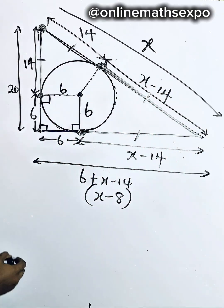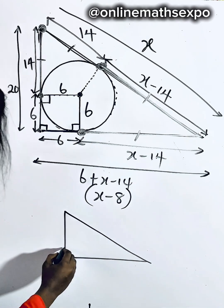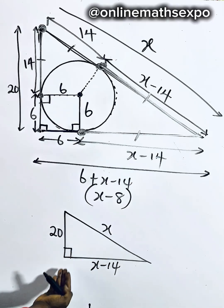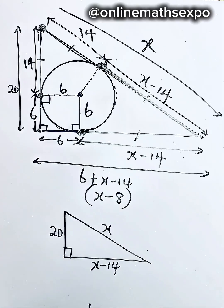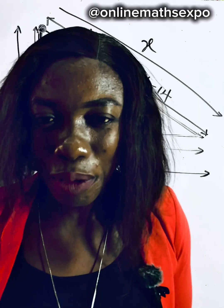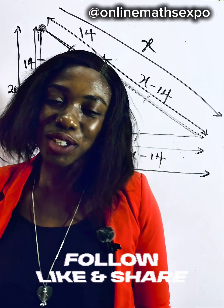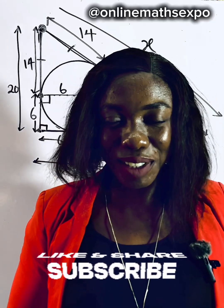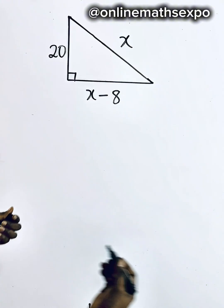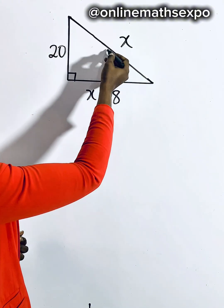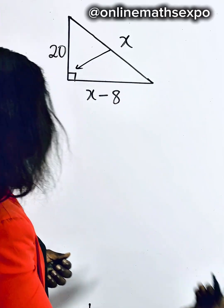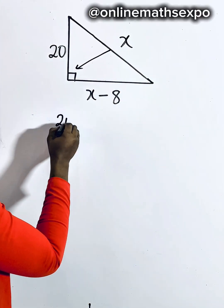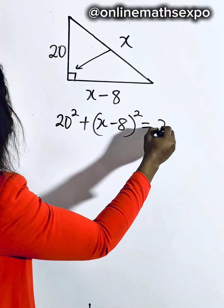This total length is x, and this is 20. So if you bring that shape out, this is what you have: here is x, here is x minus 14, and here is 20. With this, can we find the value of x? You see that this is your right triangle, and whenever you're working with the sides of a right triangle, it reminds you of your Pythagorean theorem. Applying our Pythagorean theorem, this is the longest side — the side opposite the right angle. So we're going to have 20 squared plus (x minus 8) squared should be equal to x squared.